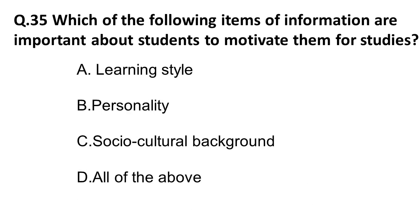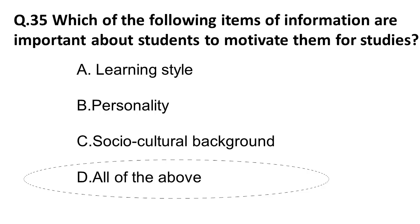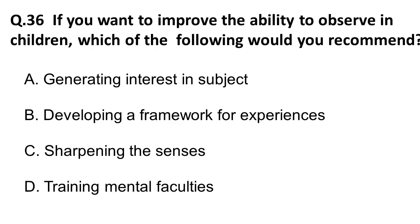Question: Which information about a student is important to motivate them for studies? Options include learning style, personality of the individual, and socio-cultural background. The correct answer is all of the above — learning style, personality, and socio-cultural background are all important.